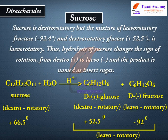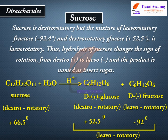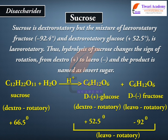Sucrose is dextrorotatory, but the mixture of levorotatory fructose (−92.4°) and dextrorotatory glucose (+52.5°) is levorotatory. Thus, hydrolysis of sucrose changes the sign of rotation from dextrorotatory to levorotatory, and the product is named invert sugar. Sucrose (+66.5°) + H₂O → glucose (+52.5°) + fructose (−92°).